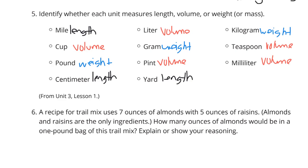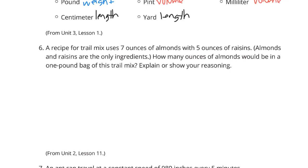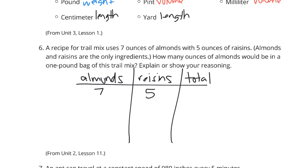And finally, question 6. A recipe for trail mix uses 7 ounces of almonds with 5 ounces of raisins. Almonds and raisins are the only ingredients. How many ounces of almonds would be in a 1-pound bag of this trail mix? Explain or show your reasoning. There are 16 ounces in a pound.